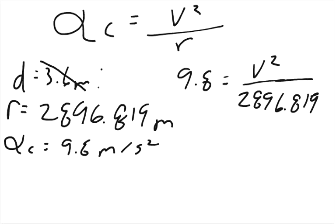You can multiply both sides. So 9.8 times 2896.819, and that gives V squared equals 28,388.83.